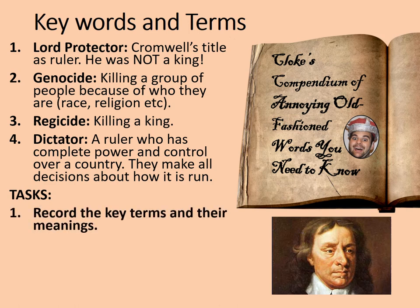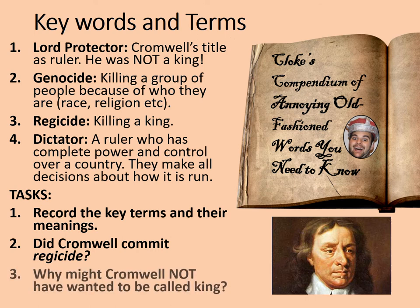Your tasks are: firstly, record the key terms and their meanings. Secondly, did Cromwell commit regicide? Think about what you may already know about the death of Charles I. Thirdly, why might Cromwell not have wanted to be called king? Well, he didn't exactly swing the axe himself, but many people see him as one of the key people involved in the killing of Charles I — his name appeared on the death warrant. As for the kingship, Cromwell had just led armies in a civil war fighting to get rid of the king. For him to then make himself king would be incredibly hypocritical. Cromwell recognised this, but it didn't stop him ruling like a king.